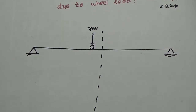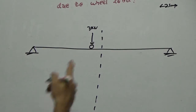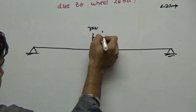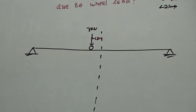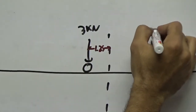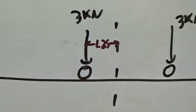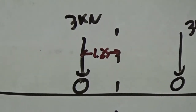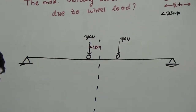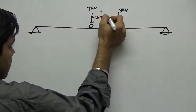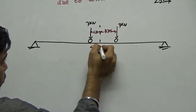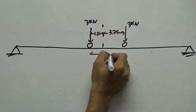The second wheel load is placed at a distance of 5 minus 1.25, that is 3.75 from the center. So this distance is 3.75, whereas the total distance between the two wheels is 5 meter.